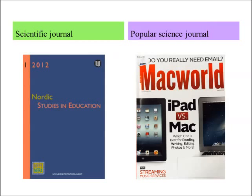Scientific texts primarily focus on other scientists, whereas popular science has the ambition to mediate scientific knowledge to the public at large.